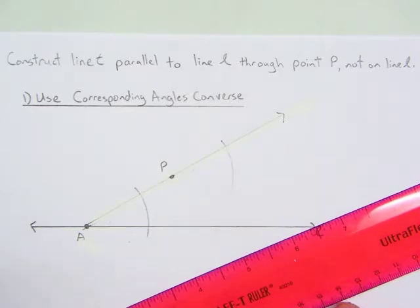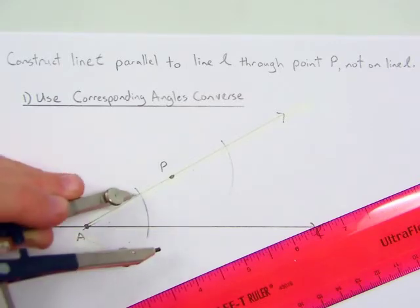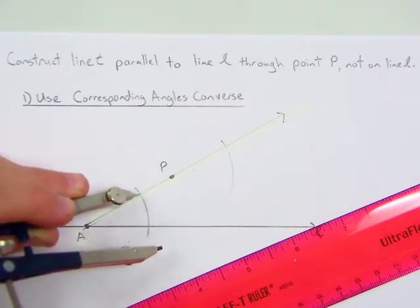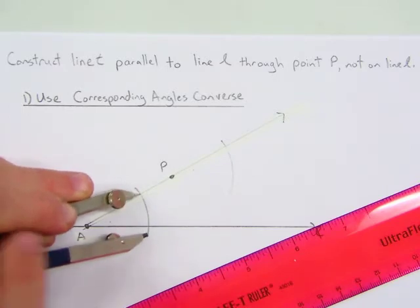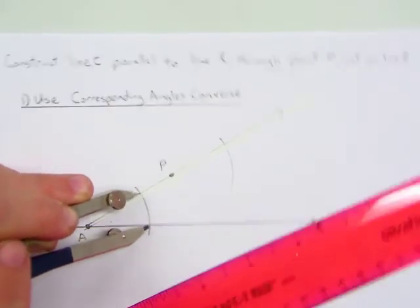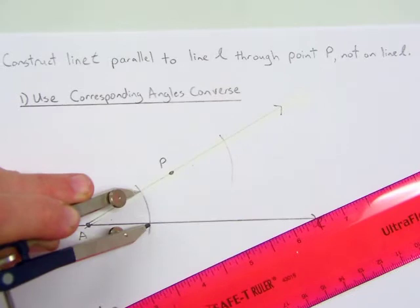Once you have that, now we want to copy the width of the angle here. So we're going to put our point of the compass on this intersection and we actually want to measure this distance here.